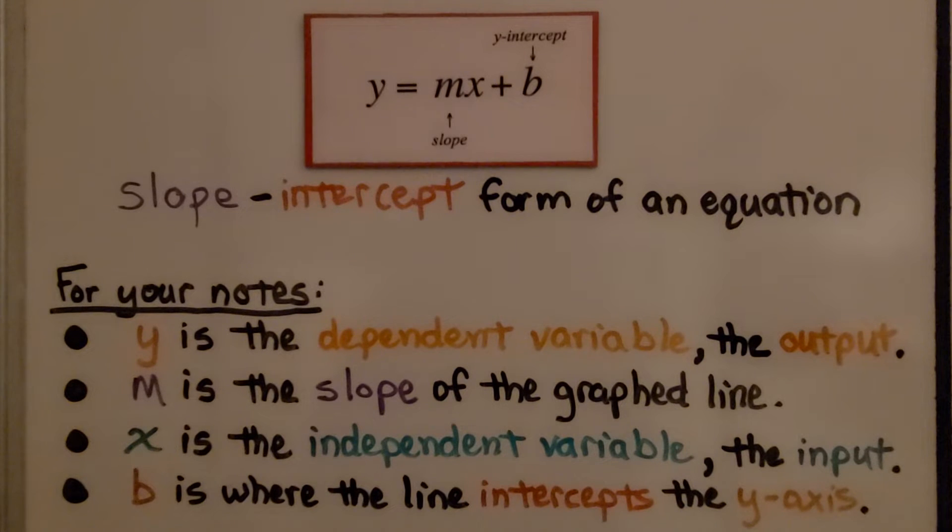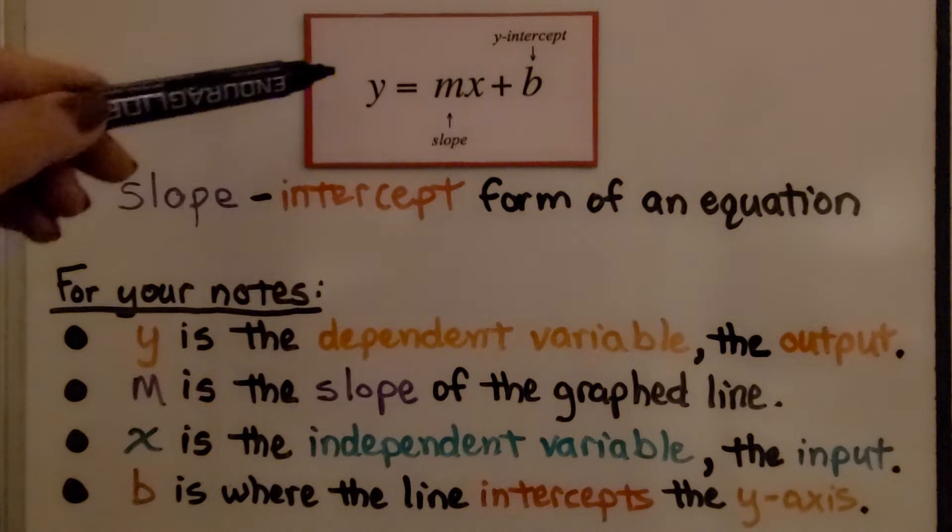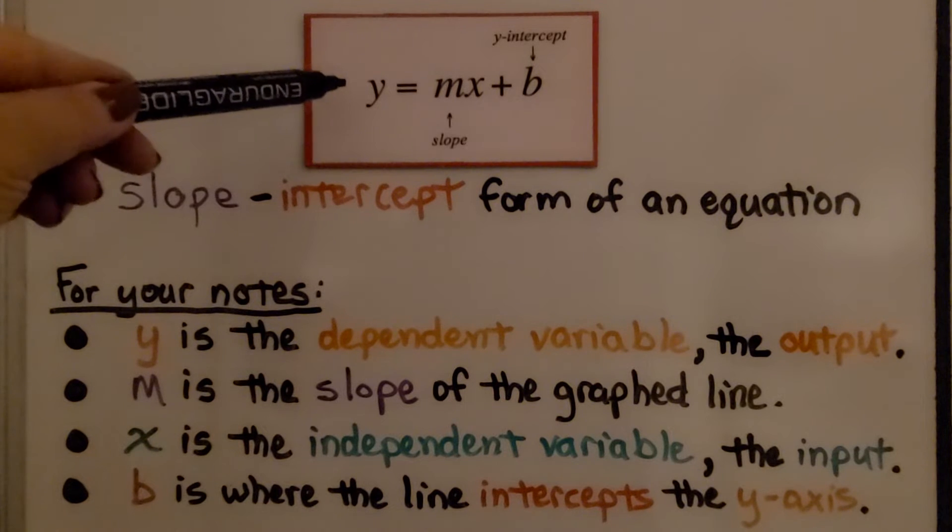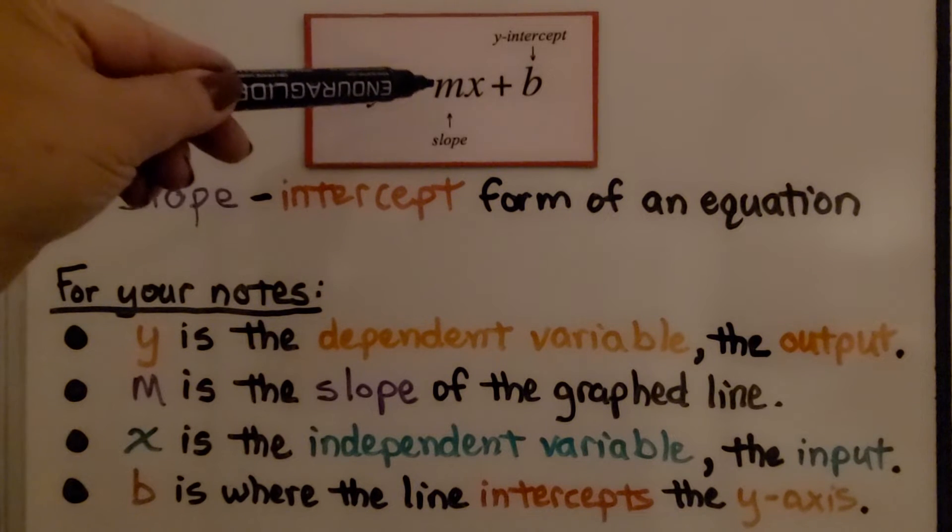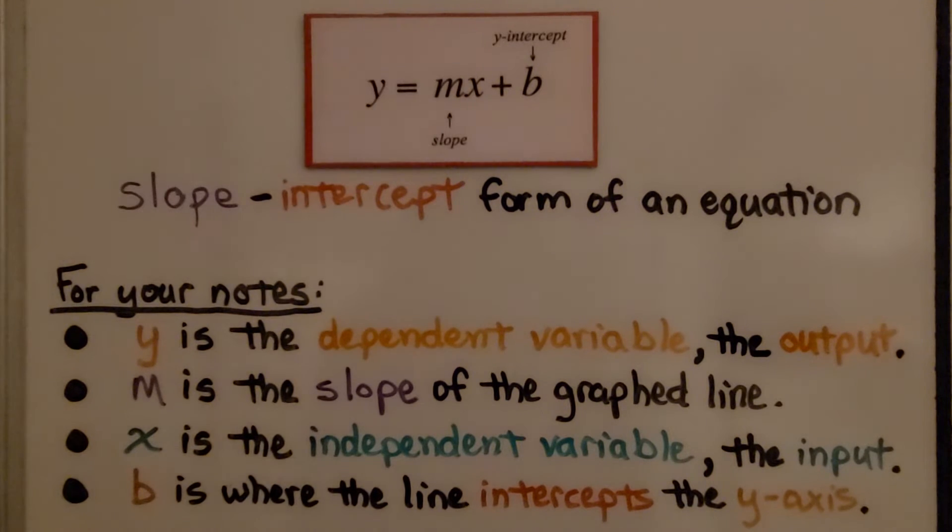I've explained this in the last couple videos, but I'm going to explain it again because I really want you to understand this and have it memorized. This is the slope-intercept form of an equation. y is the dependent variable, the output, that's why it's by itself on this side of the equal sign. m is the slope of the graphed line, x is the independent variable, the input, and b is where the line intercepts the y-axis, the y-intercept.